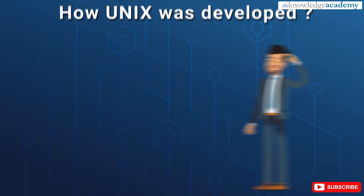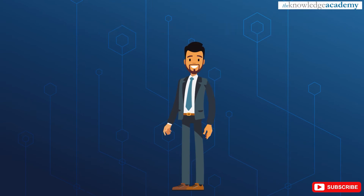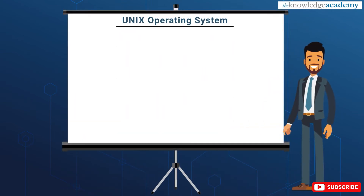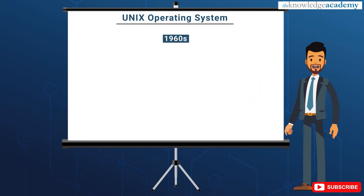Have you wondered how Unix was developed? Let's now find out the history of Unix operating system. In the late 1960s, researchers from General Electric, MIT, and Bell Labs started a joint project for developing an ambitious multi-user, multi-tasking operating system for mainframe computers known as Multics — Multiplexed Information and Computing System. But this failed.